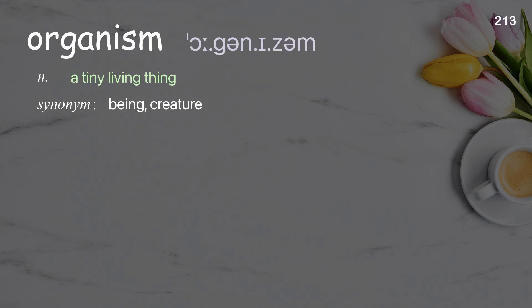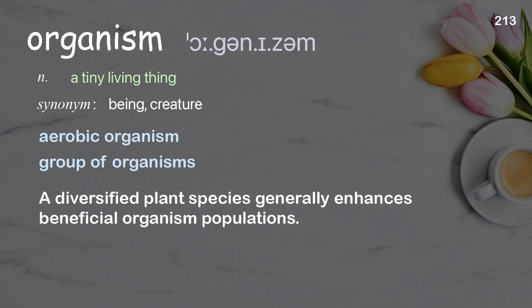Organism: a tiny living thing. Examples: aerobic organism; group of organisms. A diversified plant species generally enhances beneficial organism populations.